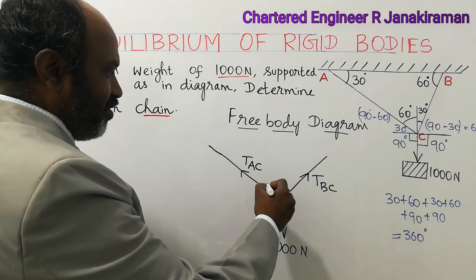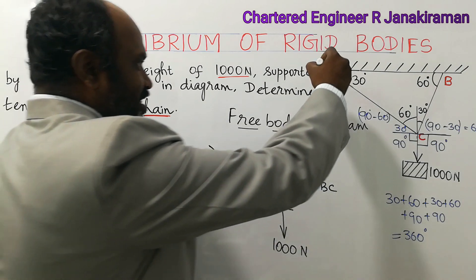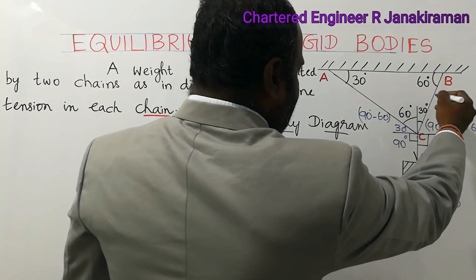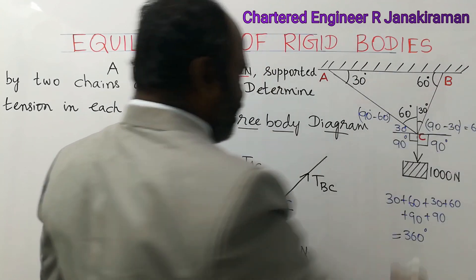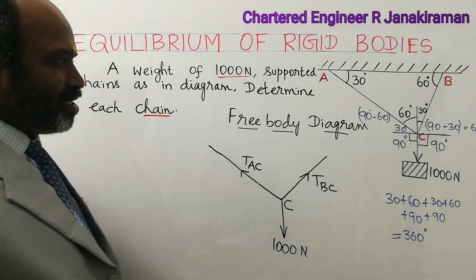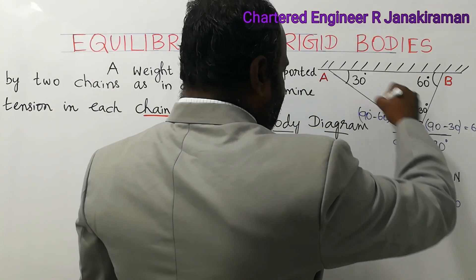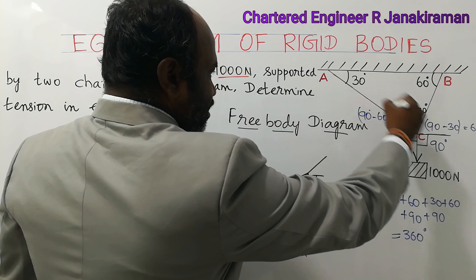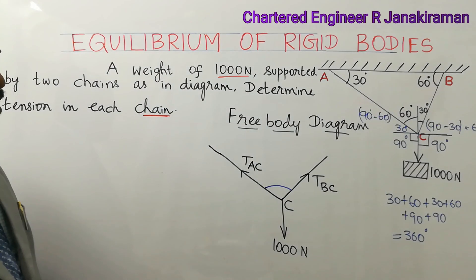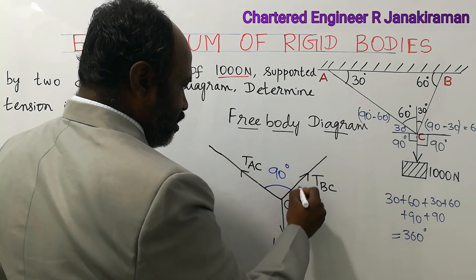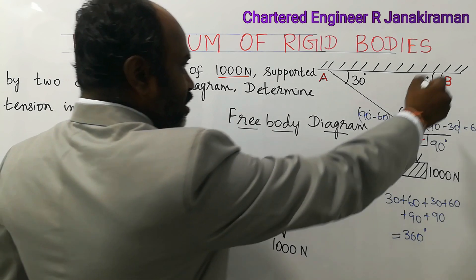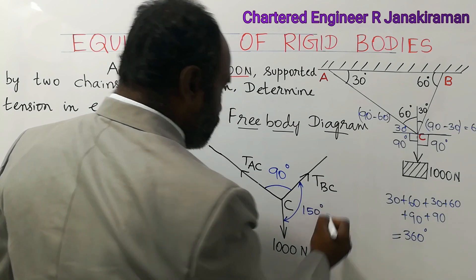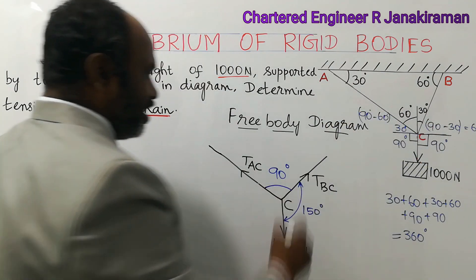Now putting these various angles into the free body diagram for tension in strings T_AC and T_BC. There are three lines — these are called chains. BC and AC are the strings, here given as chains. So the angle ACB will be 60 plus 30 equals 90 degrees. Then the angle between BC and the suspended weight will be 60 plus 90 equals 150 degrees. The angle between AC and the suspended weight will be 90 plus 30 equals 120 degrees.